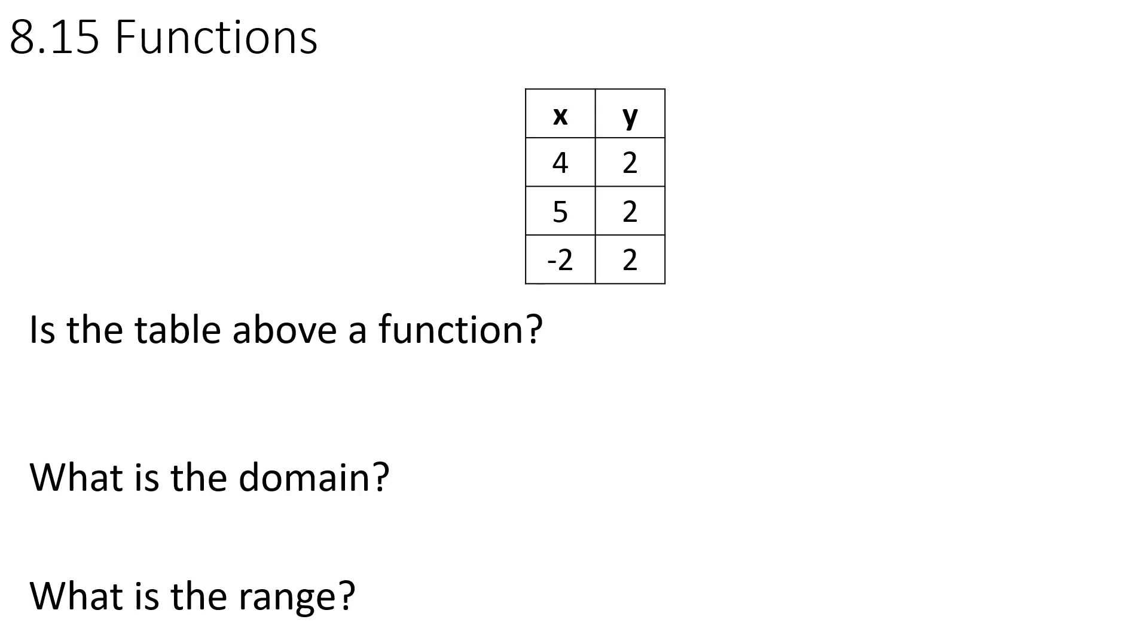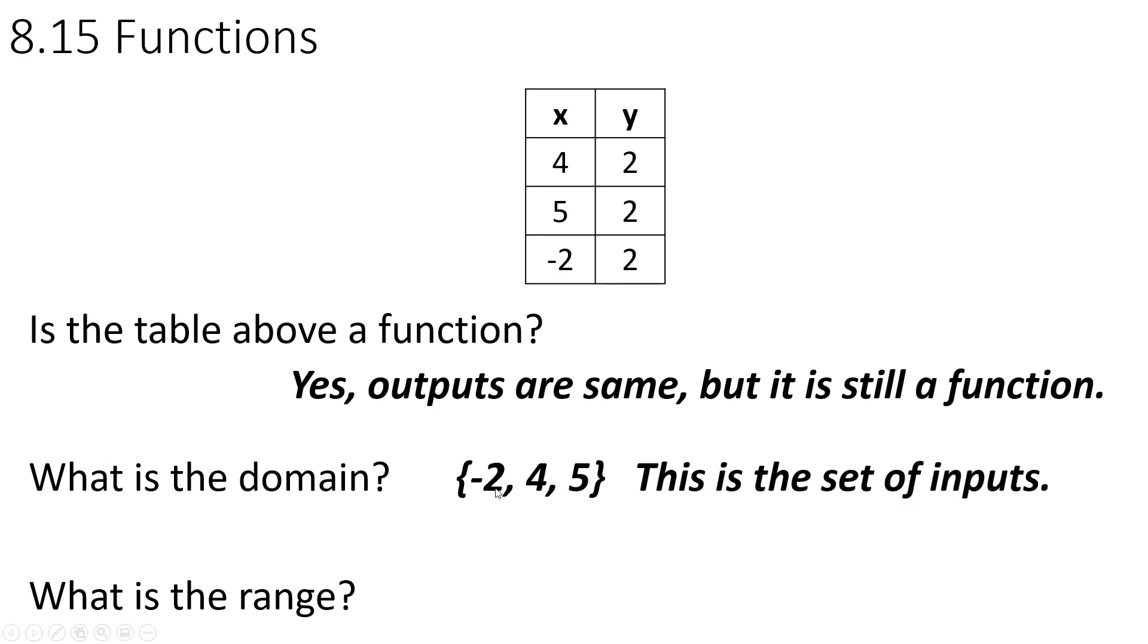Is this table a function? We've got input of 4, output of 2. Input of 5, output of 2. Input of negative 2, output of 2. All of the outputs are the same, but that's okay. Now, if you had inputs being the same giving different outputs, then there's a problem. So, this is a function. Outputs are the same, but it's still a function. The domain is all your inputs. So, you've got your 4, 5, negative 2. I just went ahead and listed them from least to greatest. That's your set of inputs, the domain. The range, well, it's 2, 2, 2. Basically, you just need to list the single 2. That is the set of outputs. There's only one output, 2. Moving on.